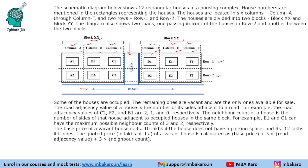Some of the houses are occupied; the remaining ones are vacant and are the only ones available for sale. So vacant ones are available for sale. The road adjacency value of a house is the number of its sides adjacent to a road. For example, the road adjacency value of C2 — C2 has one road here and another road here, so it has an adjacency value of 2.